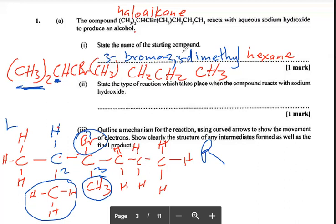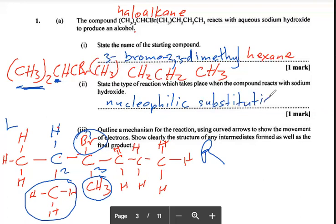The name of the reaction when the compound reacts with sodium hydroxide is nucleophilic substitution. There are two types of nucleophilic substitution: SN1 and SN2. What type of haloalkane undergoes SN1? Secondary and tertiary haloalkanes will do SN1, which means primary haloalkanes will do SN2.